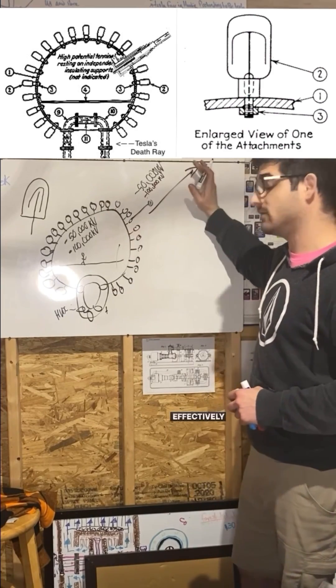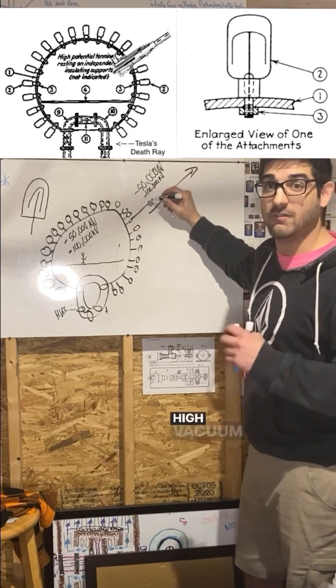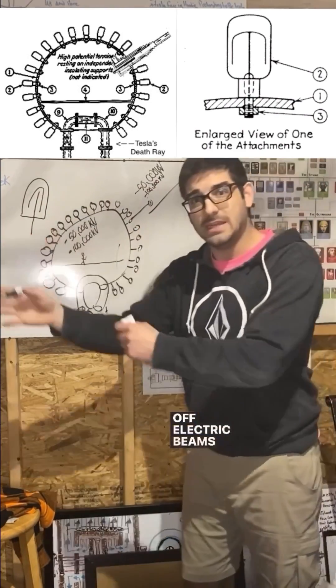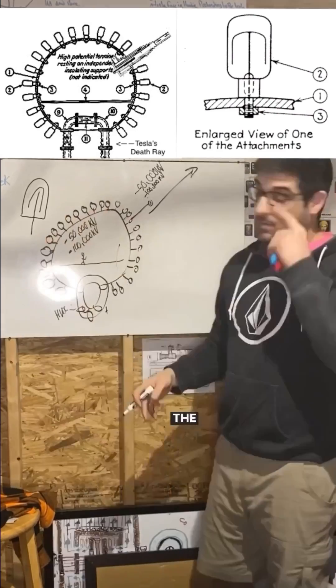Tesla says what you need to do this effectively is you have to have the particulate in a very high vacuum so that it can actually accelerate to its full velocity. The premise of this whole thing is not that it would shoot off electric beams or electricity or lightning bolts.